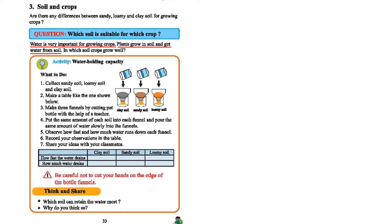You can see in the picture there are three bottles where three kinds of soil are placed. We need to observe their characteristics. In the box, it shows how fast the water drains — first in clay soil, then in sandy soil, then in loamy soil. The next observation is how much water drains in each. We will do this experiment at home.